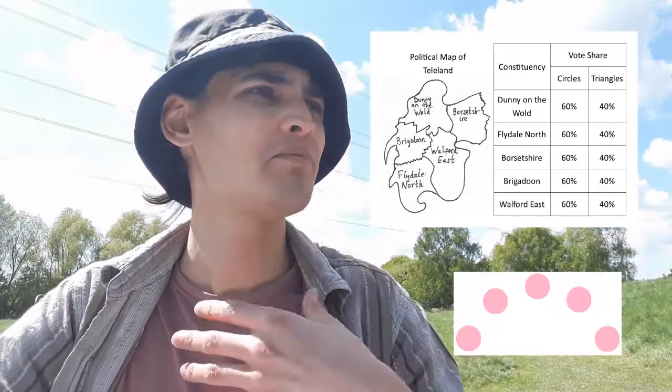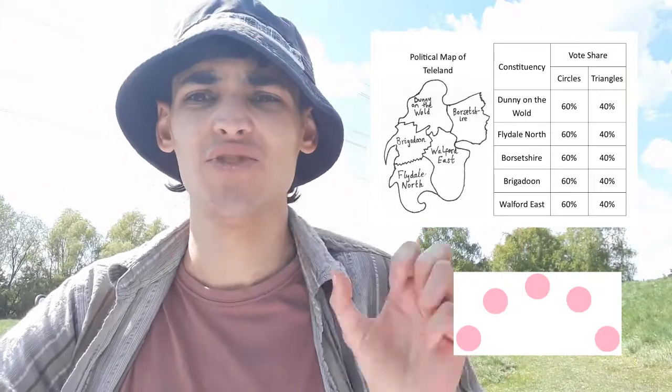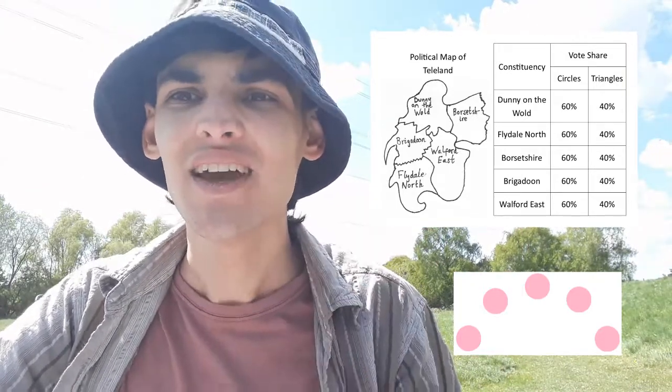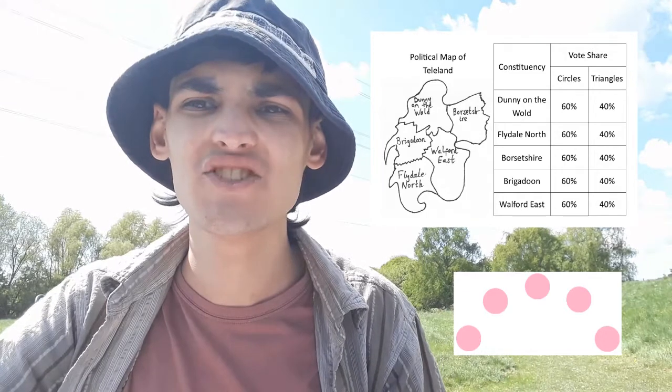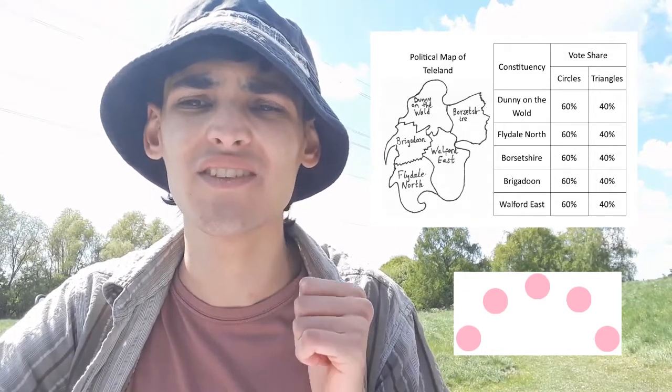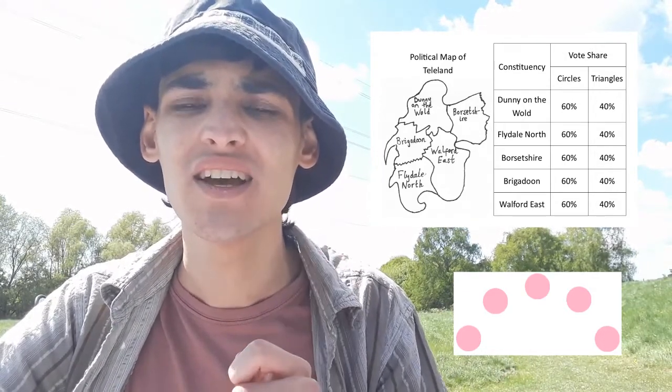And again, you might think that's a bit extreme and doesn't really happen. And again, it does. If we look at the 2019 general election, the Conservatives won that 365-seat majority, which gives them 56.2% of the House — they control 56.2%. And yet, if you look at the actual national vote share, they only got 43.6%. Which means First Past the Post has skewed the vote towards the Conservatives.